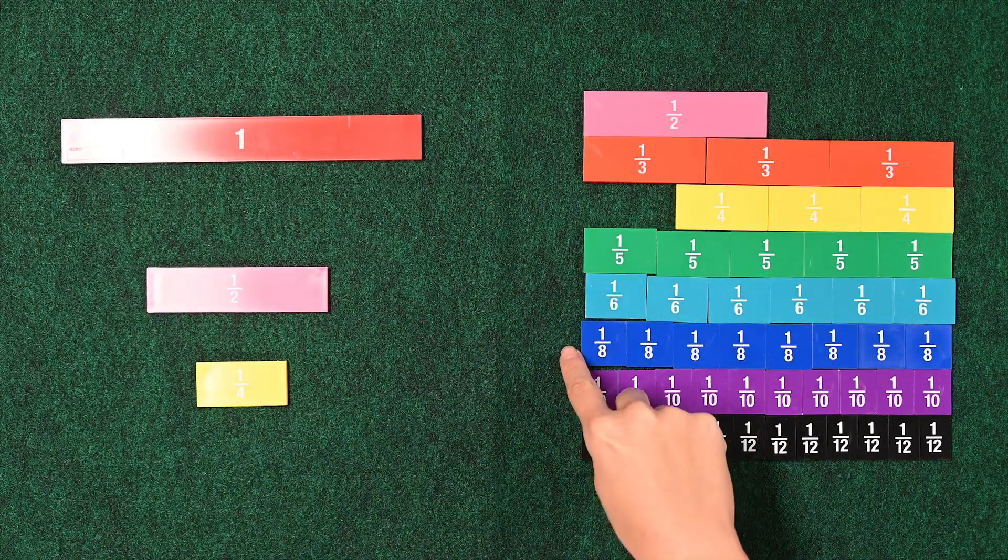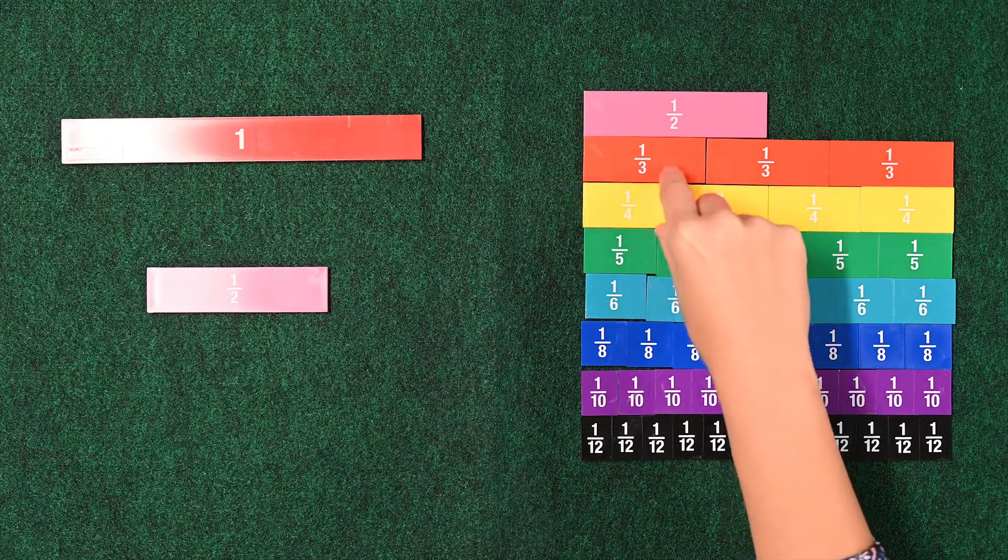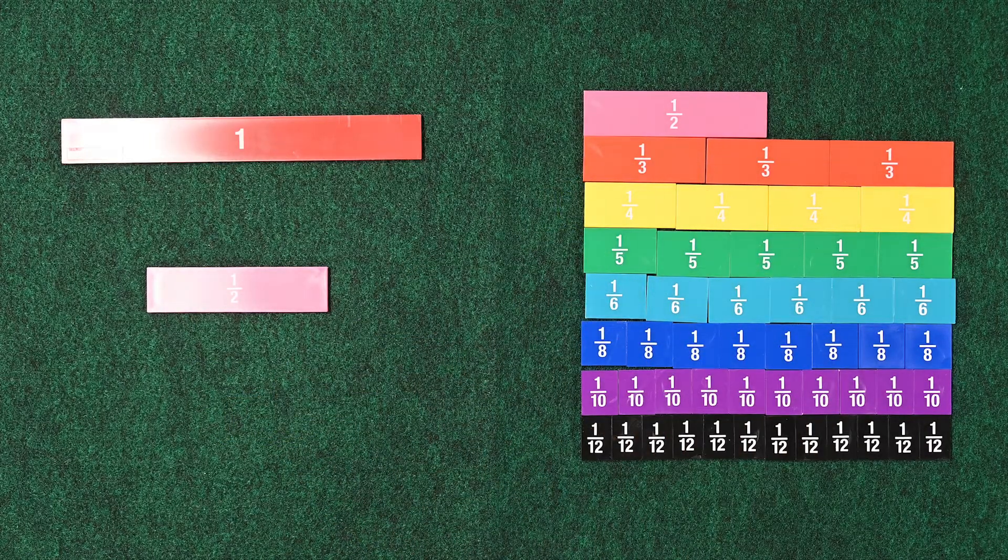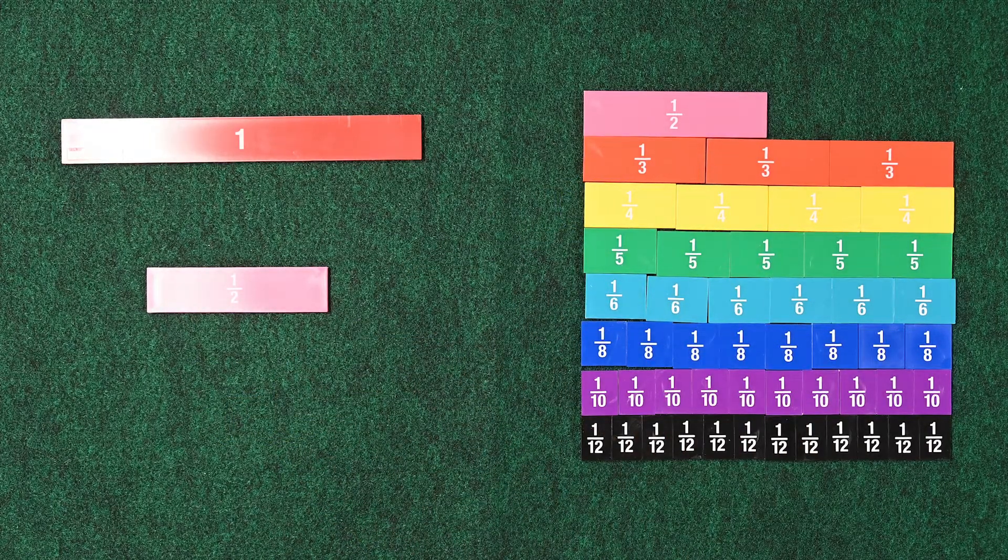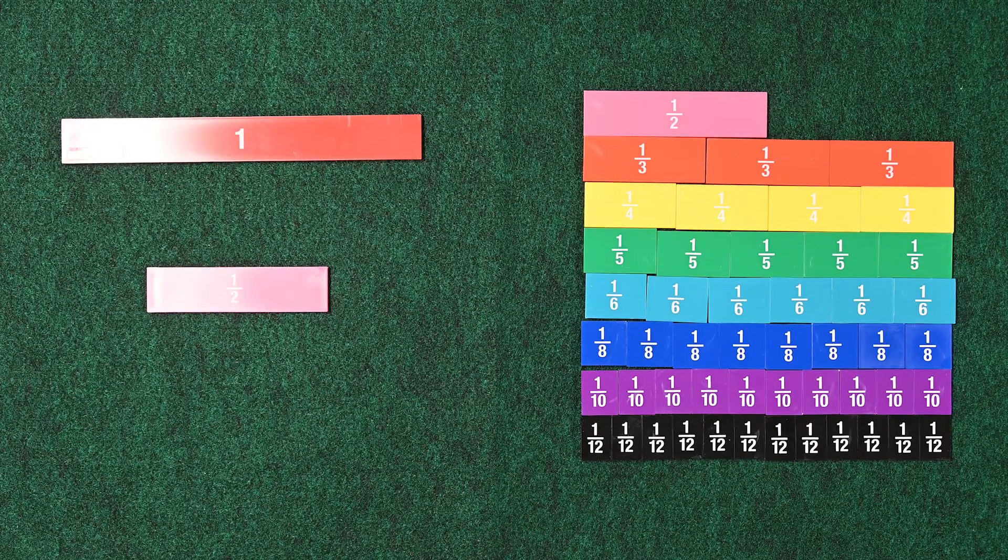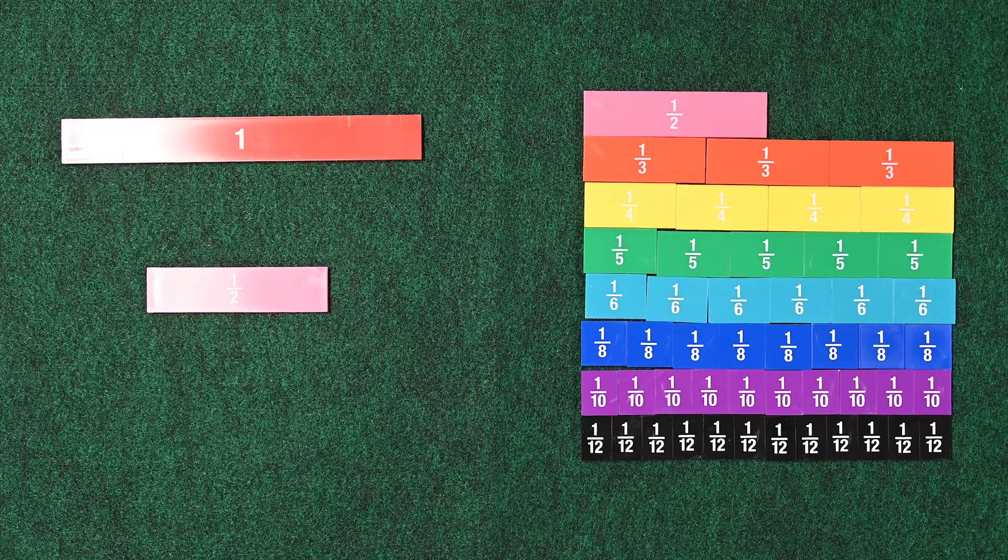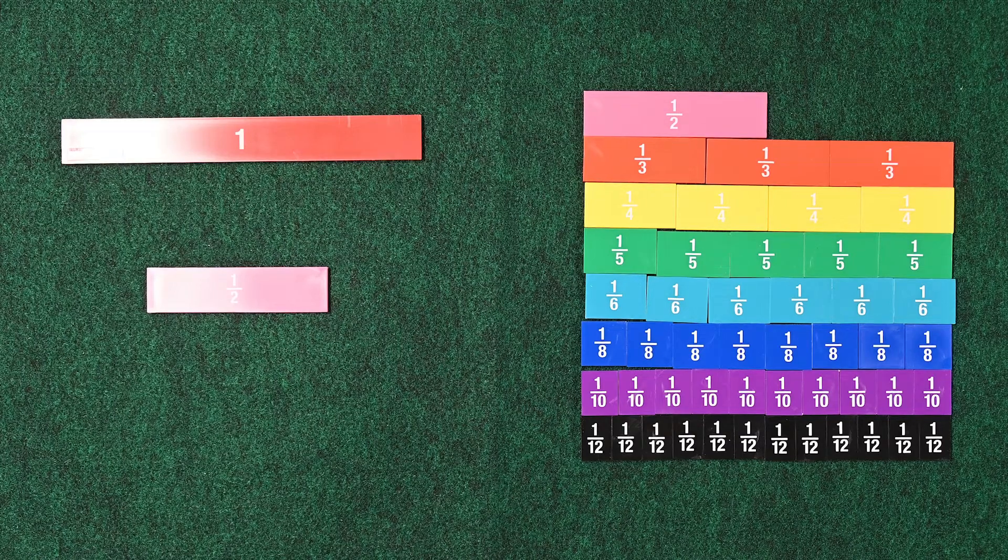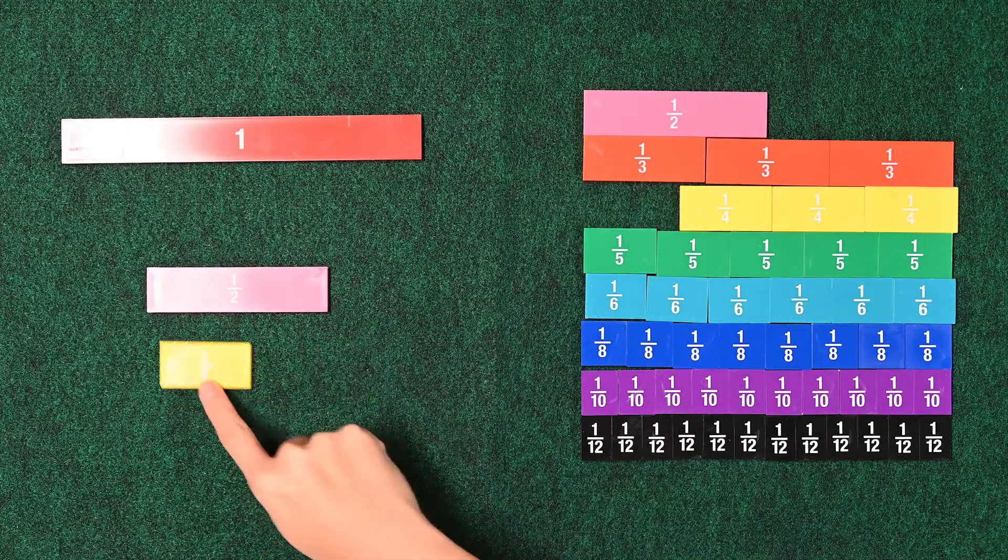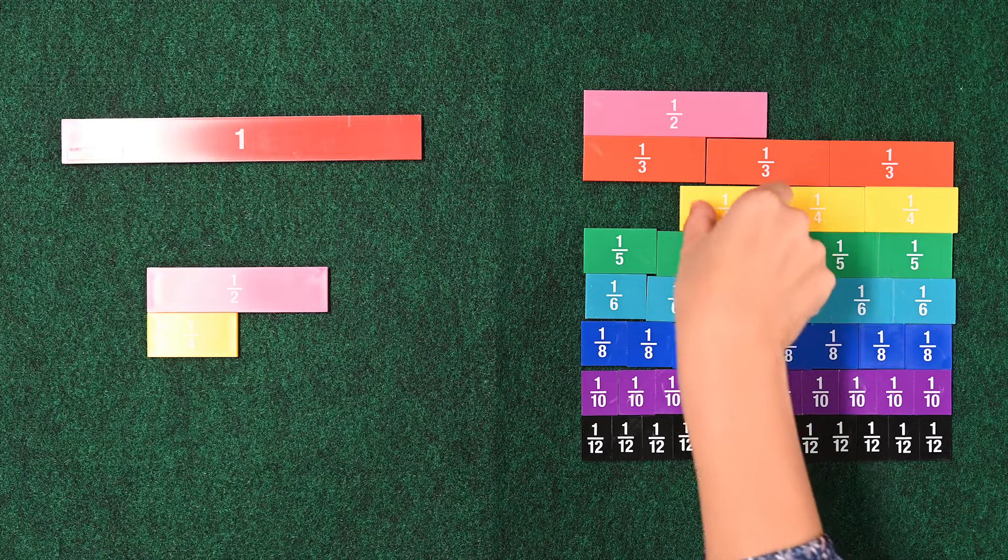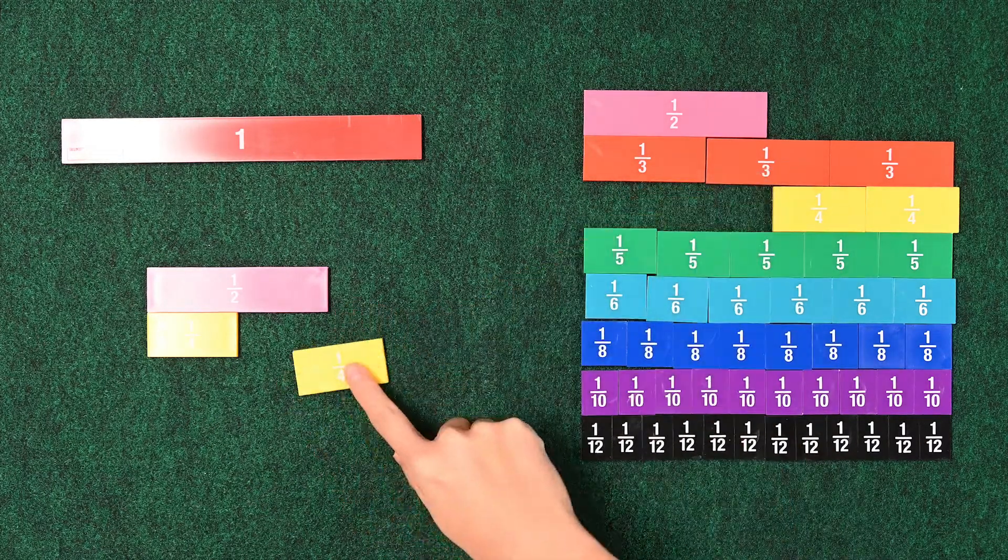And I am wondering how many ways we can make 1 half if we allow repeats. Let's go ahead and allow repeats. So you have 2 4ths. Okay, let's put 2 4ths. 1 4th and 2 4ths. 2 4ths makes 1 half.